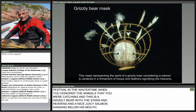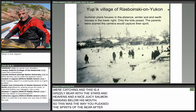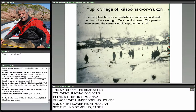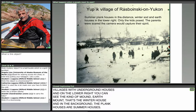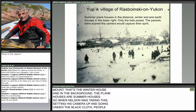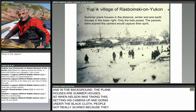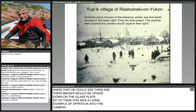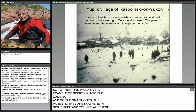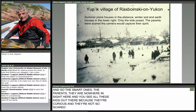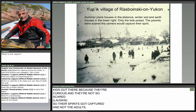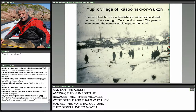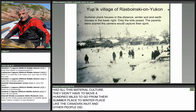In wintertime there were villages with underground houses — on the lower right you can see the mound of earth that's the winter house, while in the background the plank houses are summer houses. When Nelson was setting up his camera and going under the black cloth, people got really scared — they knew he could see them and their images would be upside down on the glass plate. To them, this was a living example of spirits entering the camera. The smart parents are nowhere in sight; you see just kids out there because they're curious and not so scared. These villages were stable — unlike Canadian Inuit, they didn't have to move a hundred miles between summer and winter places. They could stay on the Yukon River, Kuskokwim, or the coast. That's why they had all this material culture.